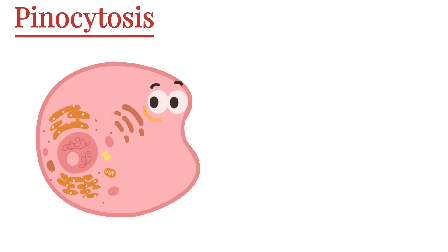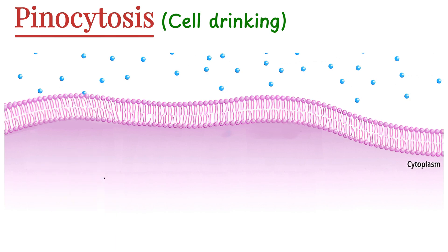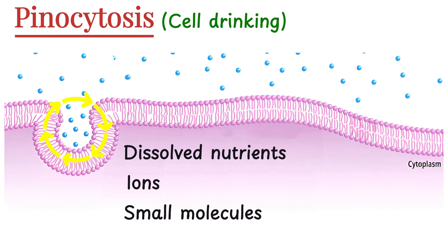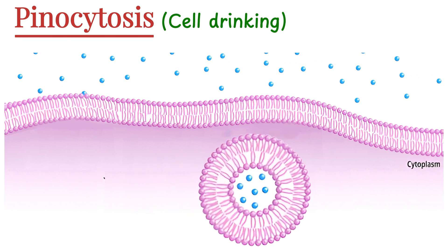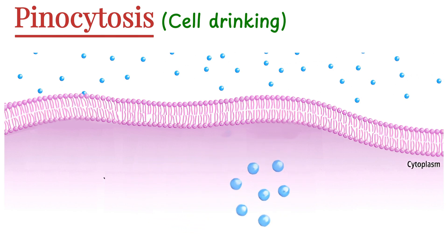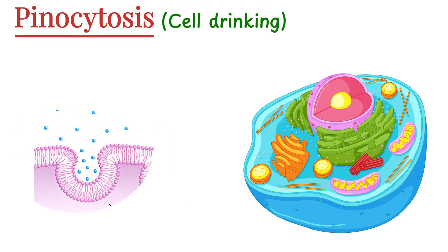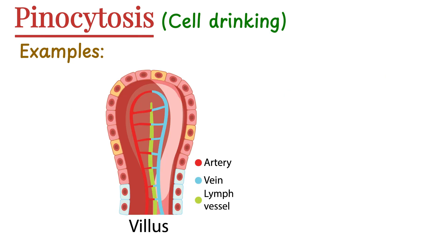Pinocytosis is more like the cell taking little sips of its surrounding fluid — hence the nickname cell drinking. In this process, the cell doesn't wait for specific targets. Instead, it folds inward a small part of its membrane, forming a tiny pocket. This pocket traps droplets of extracellular fluid, which may contain dissolved nutrients, ions, or small molecules. The pocket then pinches off inside the cell, forming a small vesicle filled with that fluid. Pinocytosis is a nonspecific process — the cell just absorbs a sample of what's around, like tasting the soup to see what's in it. It's commonly seen in cell types actively absorbing nutrients, like cells lining your intestines or blood vessels.